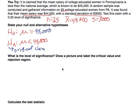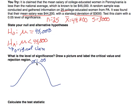Now, what is our level of significance? We want to test this with a certain alpha level and we are told that the level of significance is 0.05. We're going to draw a picture and label the critical value and rejection region. With 0.05 as our level of significance, is this a one-tailed test or two-tailed test? Think about that as I finish drawing the bell curve.